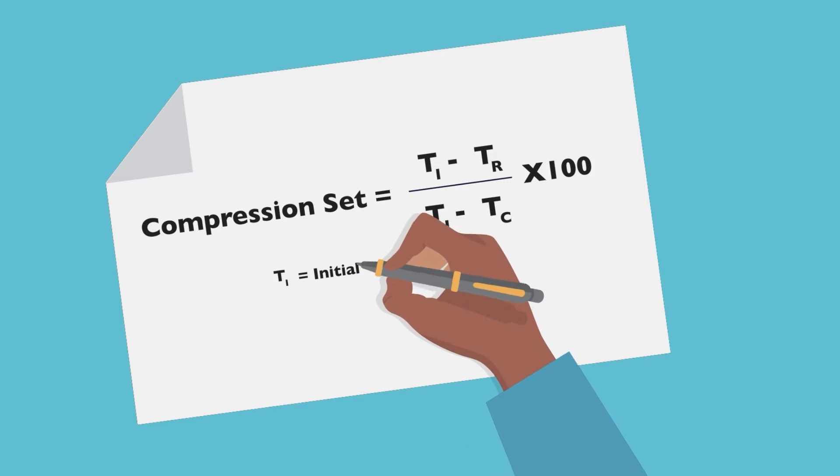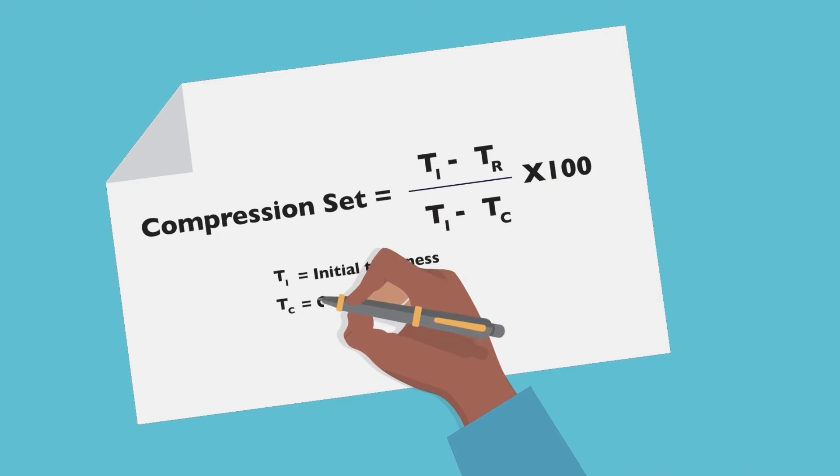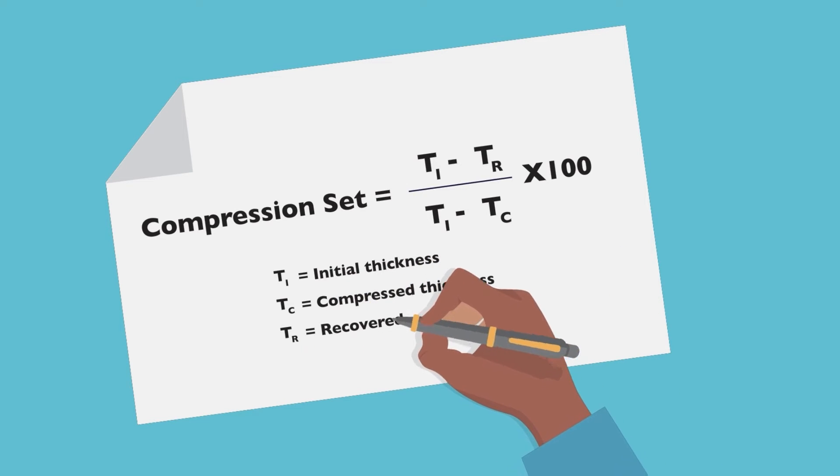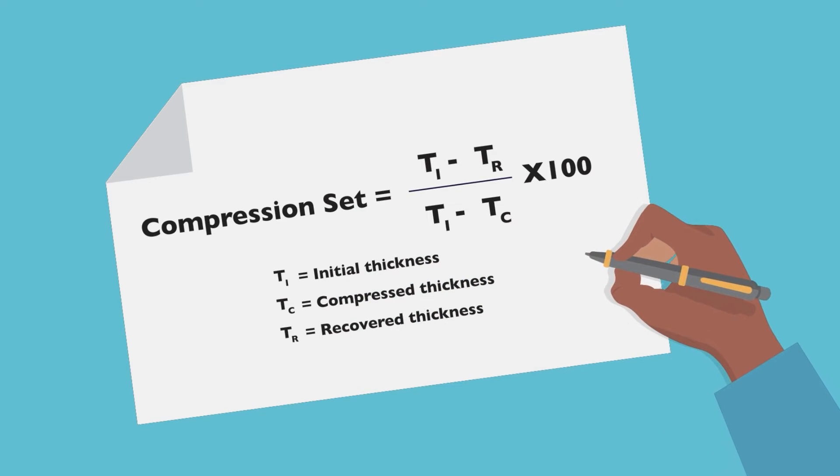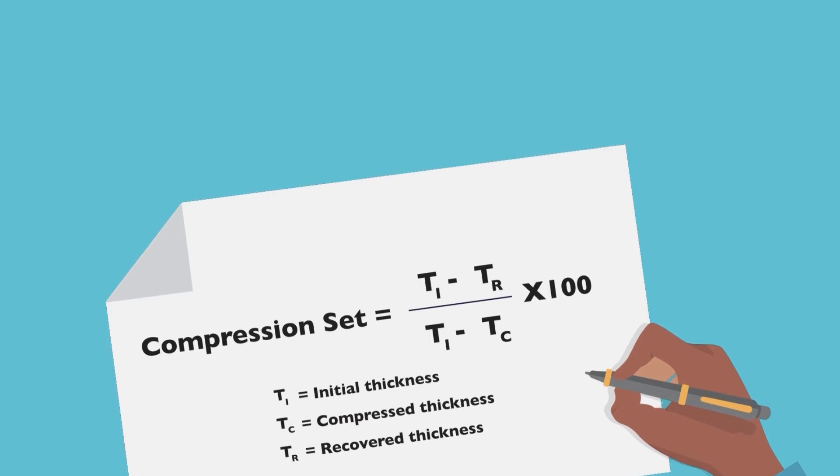Complete recovery is 0% compression set. 100% would show that the sample had not recovered at all. The lower the compression set value, the more recovery, the better the result.